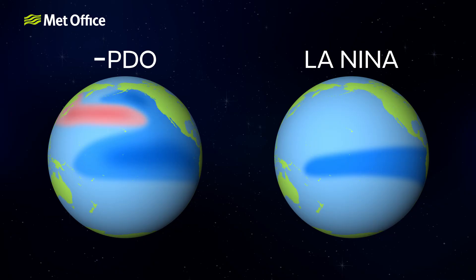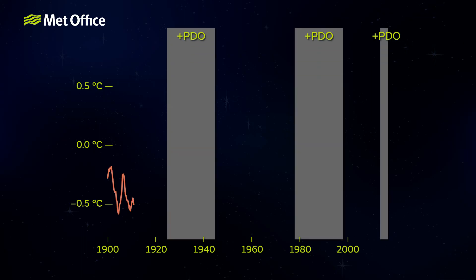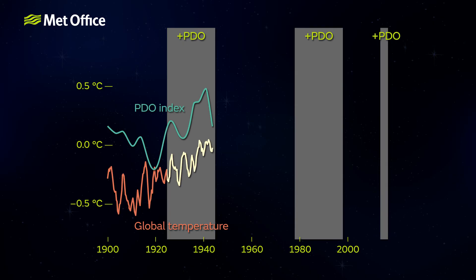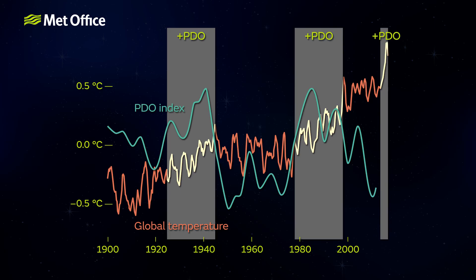And much like El Niño and La Niña, the PDO can influence weather events and global average temperatures. Positive phases of the PDO tend to be associated with periods of more rapid global warming, while negative phases can be linked to times of slower warming. This is because cold phases tend to increase mixing of colder, deep ocean waters with warmer surface waters, and this is enough to temporarily reduce the rate of global warming caused by increased greenhouse gas emissions.